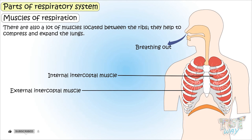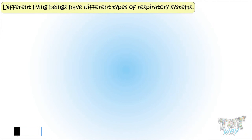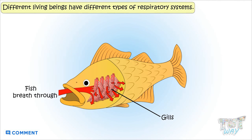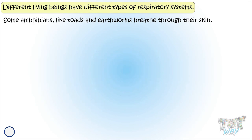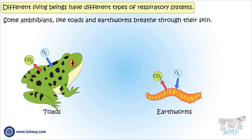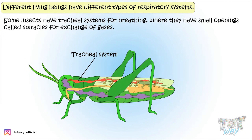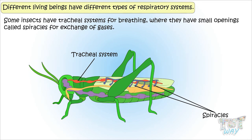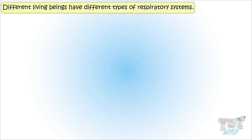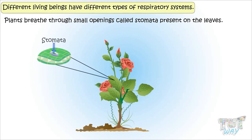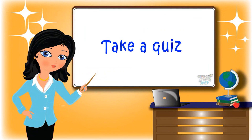Today we learned about the respiratory system in humans. Different living beings have different types of respiratory systems — fish breathe through gills, some amphibians like toads and earthworms breathe through their skin, and some insects have tracheal systems with small openings called spiracles for the exchange of gases. Even plants breathe through small openings called stomata present on their leaves. All living organisms breathe, though their systems differ.